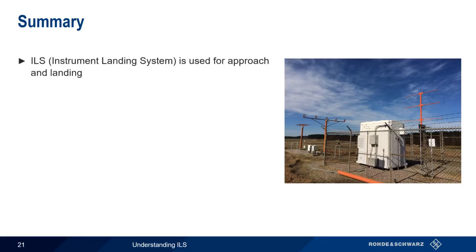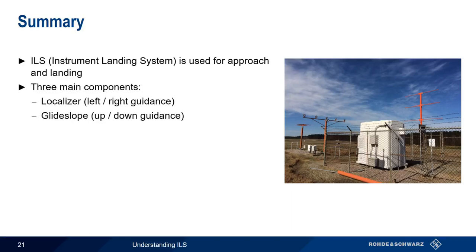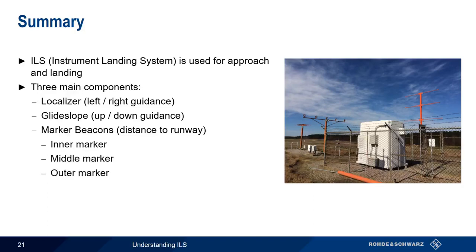So in summary, ILS, or the instrument landing system, is designed for use in approach and landing. The three most important components of the ILS are the localizer, which provides horizontal or left-right guidance, the glide slope, which provides vertical or up-down guidance, and marker beacons, which provide simple visual and audio indications of the distance to the runway. The three types of marker beacons are inner markers, middle markers, and outer markers, although most approaches don't make use of all three marker types.